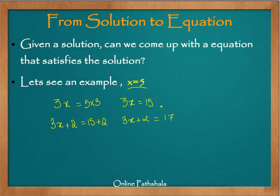Now see, this was equation 1 which satisfies the solution x equals 5. This is second equation which again satisfies the solution x equals 5. And how do you find out? So simply if you substitute x equals 5 in the left hand side of the equations, you will see that you get the right hand side which is 15 and 17 in these cases.